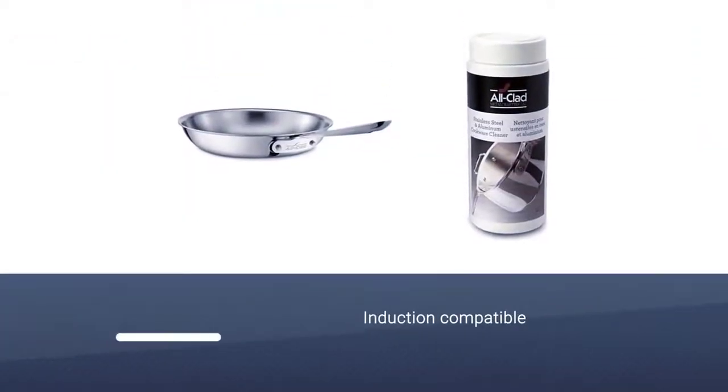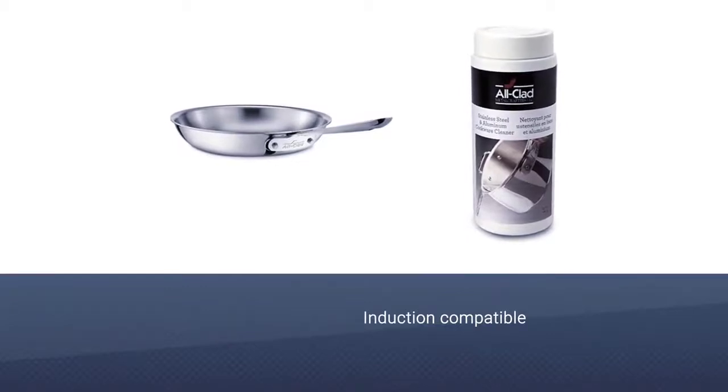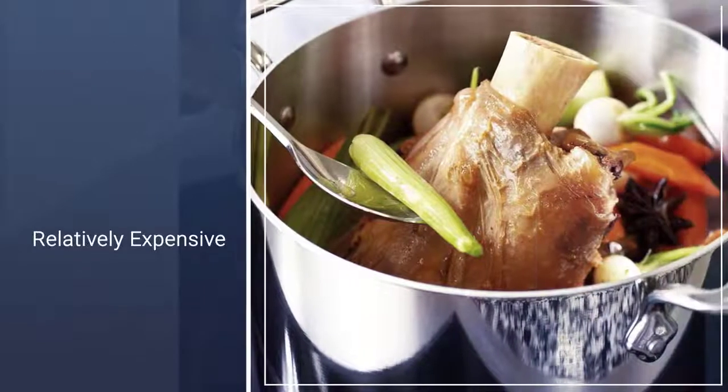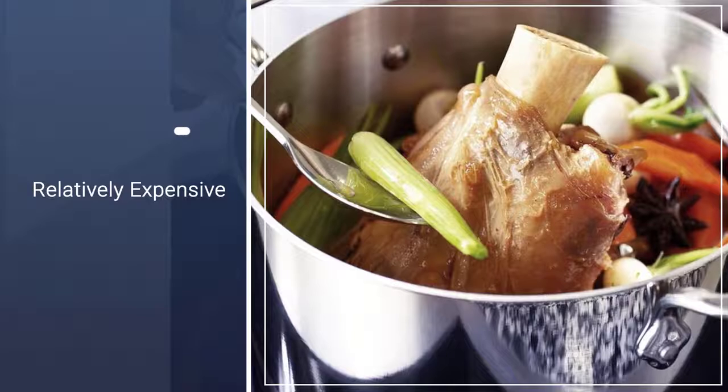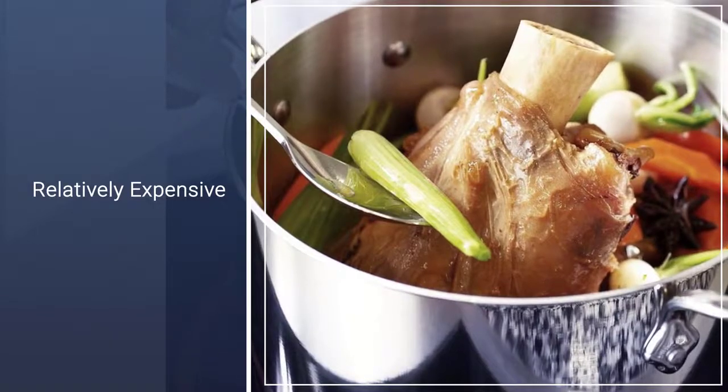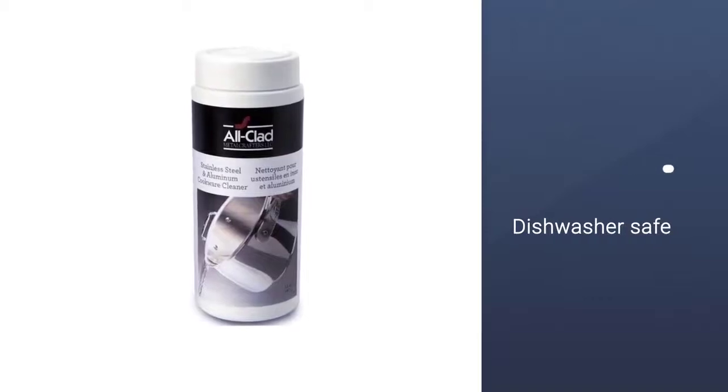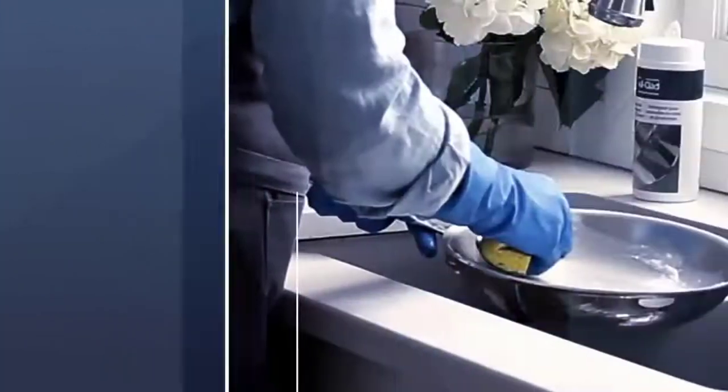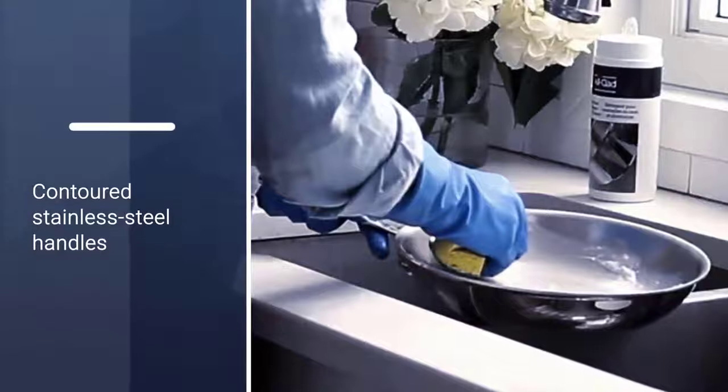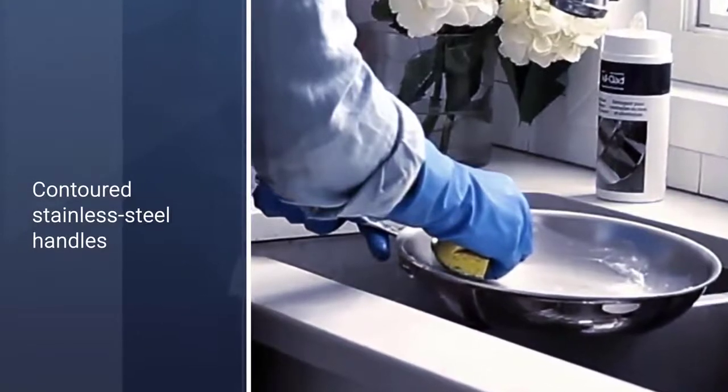This large pan is oven and broiler safe up to 600 degrees, so you can start cooking on the stove and finish in the oven. And it's induction compatible. It has an aluminum core on the bottom and up the sides of the pan which is totally covered with durable stainless steel for fast, even heating and easy cleaning by hand or in the dishwasher.